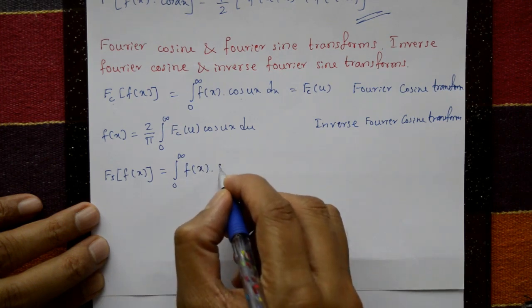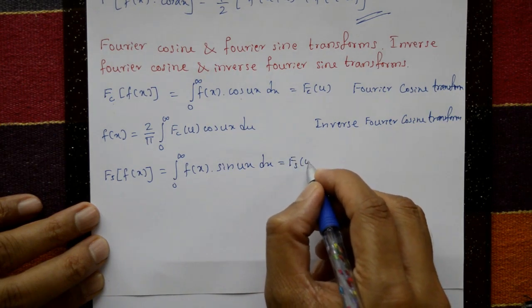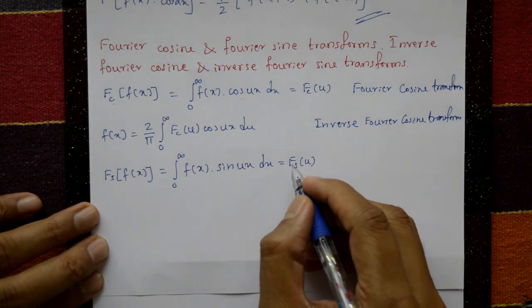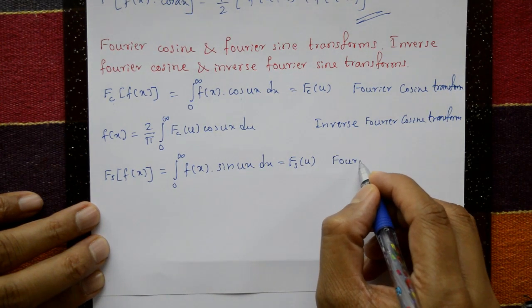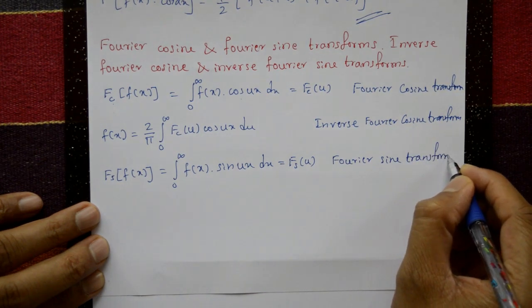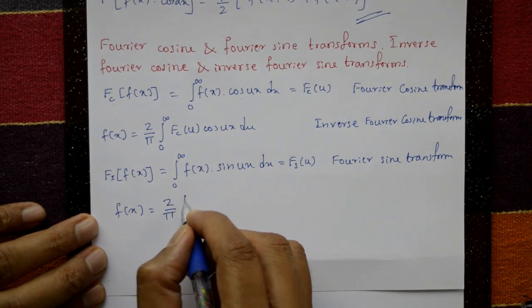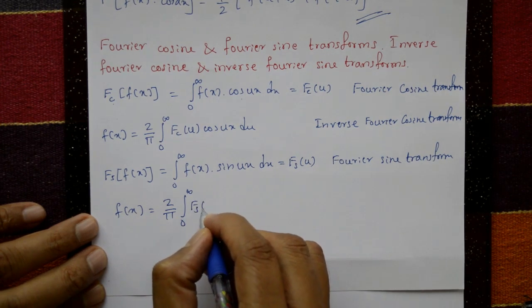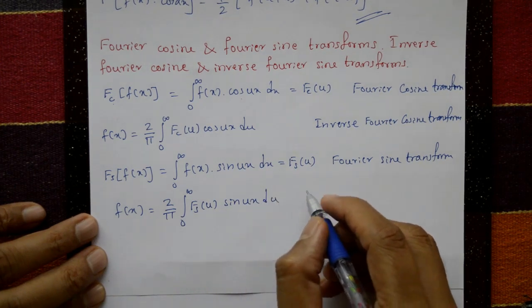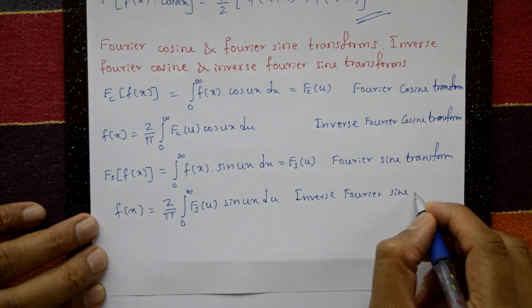The Fourier sine transform is Fs{f(x)} = integration from 0 to infinity of f(x) sin(ux) dx, equal to Fs of u. The inverse Fourier sine transform is f(x) = (2/π) integration from 0 to infinity of Fs(u) sin(ux) du.